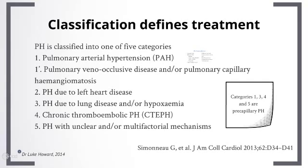Categories 1, 3, 4, and 5 in this classification are all termed precapillary pulmonary hypertension.